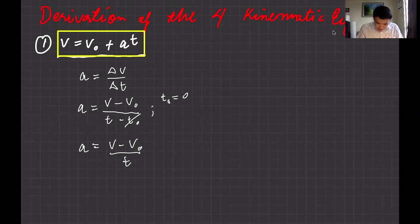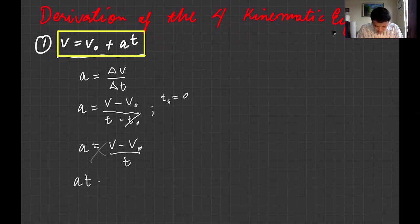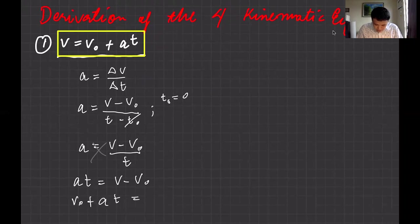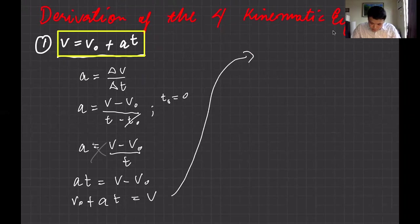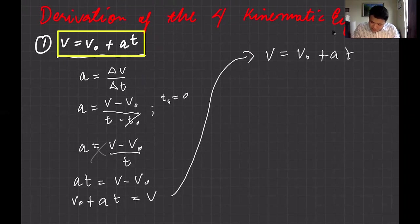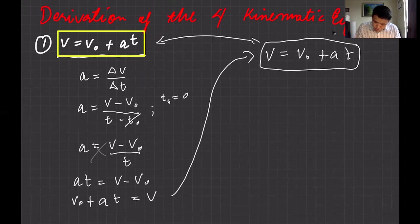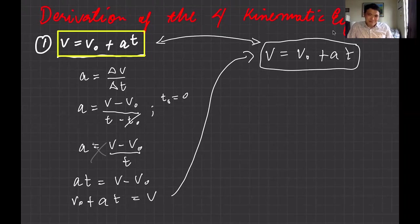In algebra, you can cross-multiply: t goes to the left side, giving at equals v minus v-naught. Transfer v-naught to the other side — it becomes positive — so v-naught plus at equals v. The standard form puts the result on the left: v equals v-naught plus at. That is equation number one, derived from the basic definition of acceleration. So it's not magic — it's math and physics.